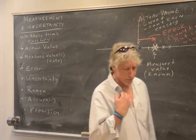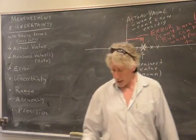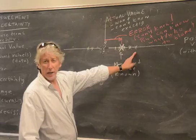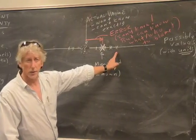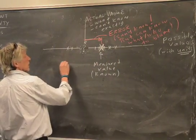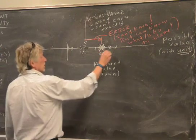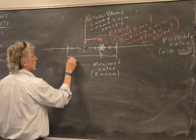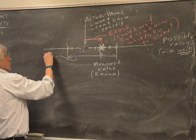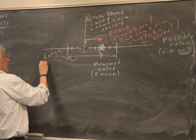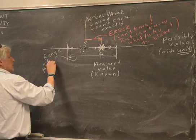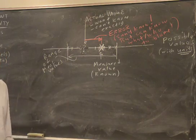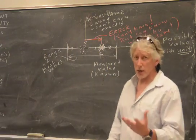We want to look at uncertainty. Let me start with range. One thing you can do is look at the range of values that you got. This would be your range — the range of your measured values. That's a pretty good indicator, but there are other ways.